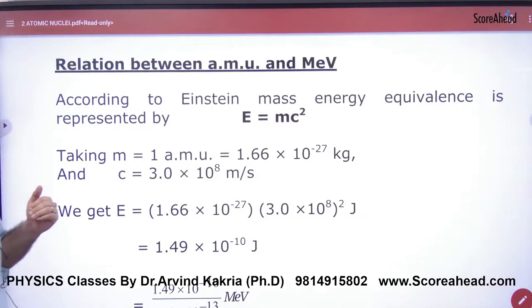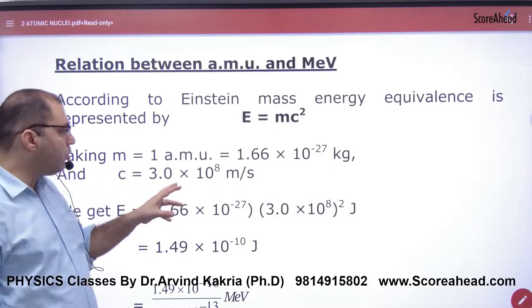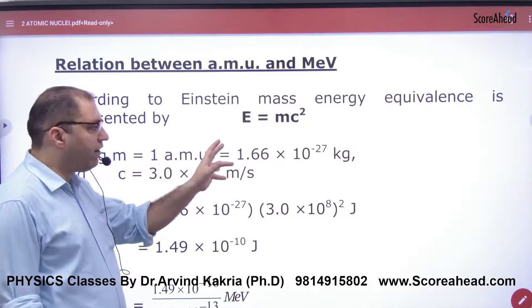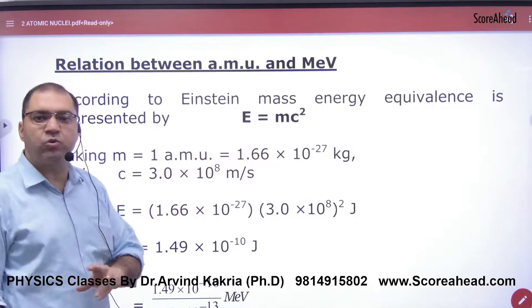So what is the relation between AMU and mega electron volt? The AMU is a mass unit. The AMU is 1.66 into 10 to the minus 27 kg.